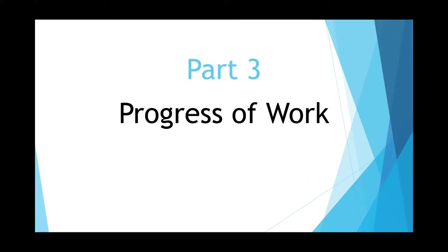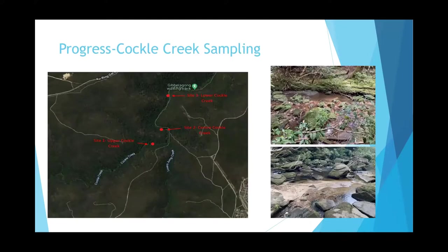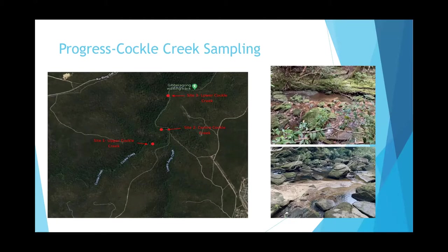For part three we're going to look at the progress of work. I had to make some changes to my section of the study — originally I was going to sample the Cowan Creek catchment and some surrounding creeks, but due to access issues and the size of the waterways I decided to focus on Cockle Creek. On the 29th of August I was able to get out and explore the creek and find good sampling sites, which are the three shown here in that map. These two pictures here are from my first and second site, giving a view of my locations.